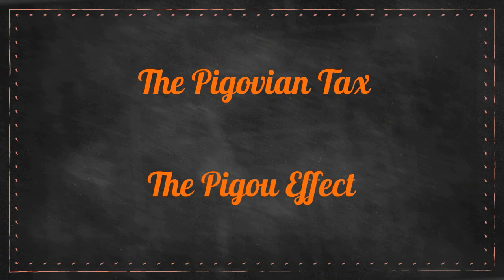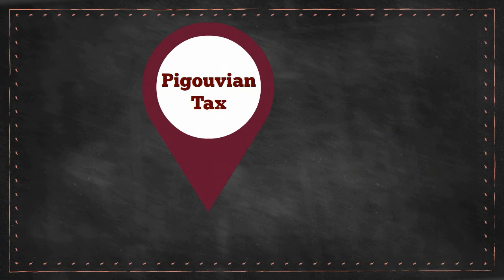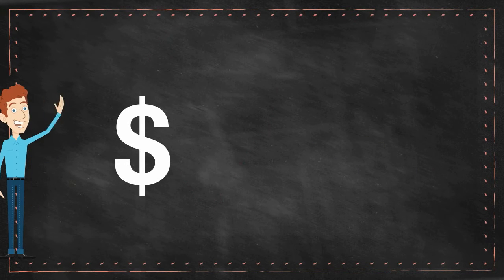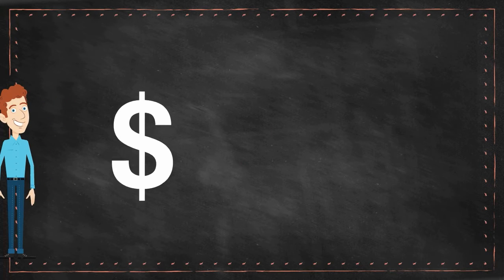Now let's get deeper into the two important concepts that affect macroeconomics: the Pigouvian tax and the Pigou effect. The Pigouvian tax is a tax put in place whenever market activities generate negative externalities.